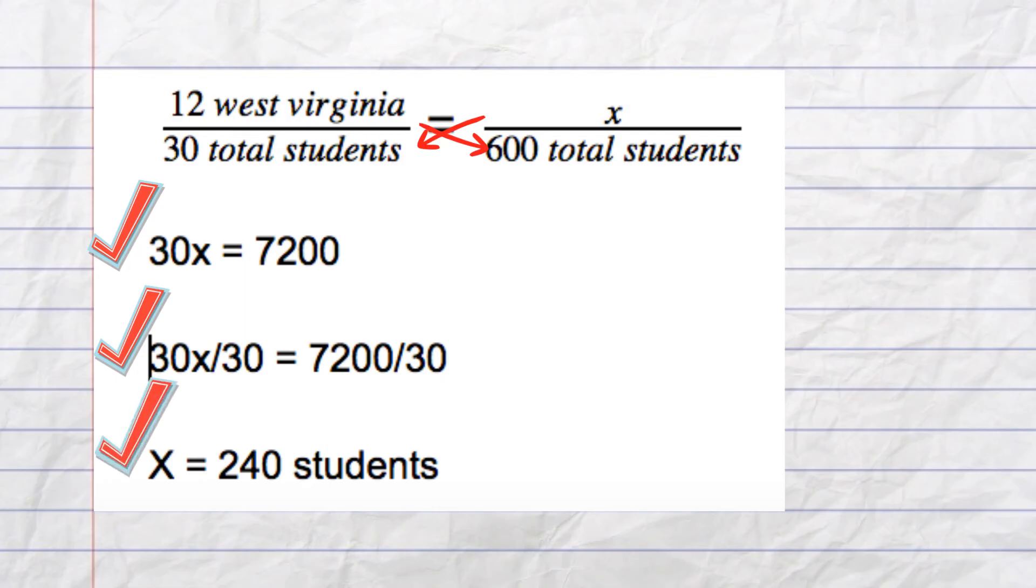And when we do that, we get X is equal to 240 students. So there is a high likelihood of 240 students went skiing at West Virginia.